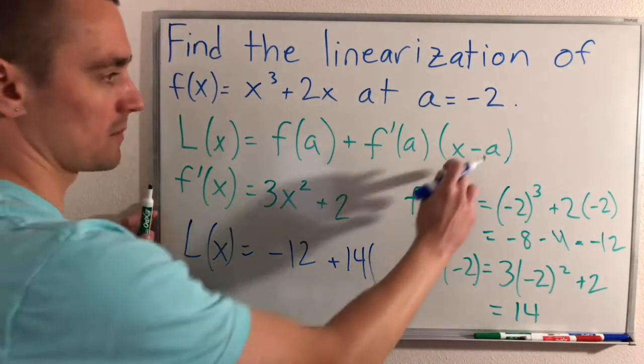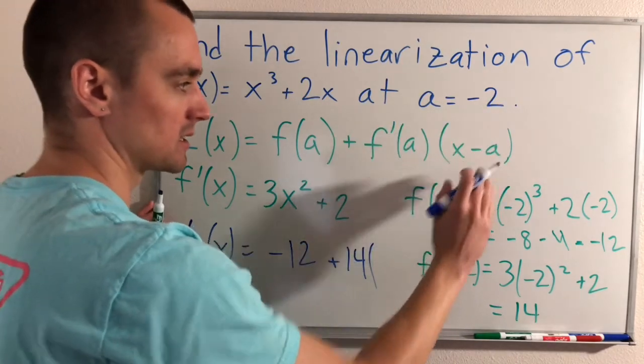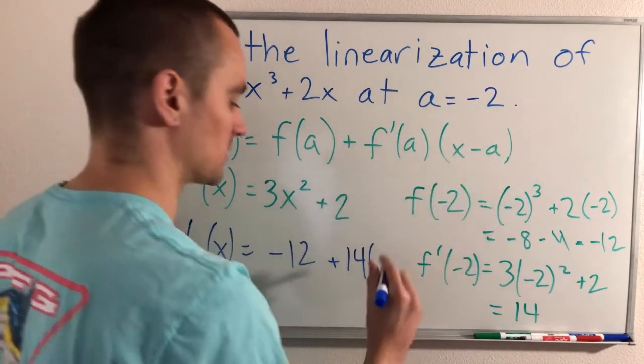And then we're just going to multiply that by (x - a). a is negative 2, so x minus negative 2 would be x plus 2.